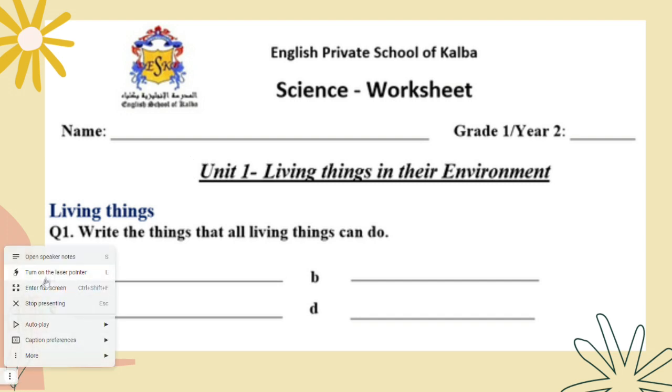Living things are things that are alive. What are the examples? Humans just like us, plants and animals. Now question number one, write the things that all living things can do. So think about the characteristics of living things.